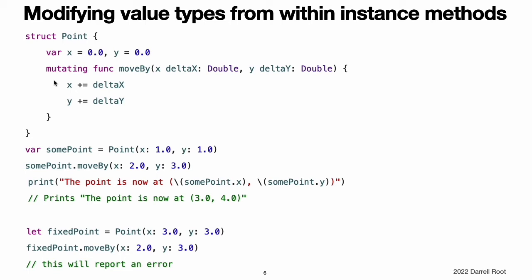The method can also assign a completely new instance to its implicit self property, and this new instance will replace the existing one when the method ends. You can opt into this behavior by placing the mutating keyword before the func keyword for that method. The point structure defines a mutating moveby method, which moves a point instance by a certain amount. Instead of returning a new point, this method actually modifies the point on which it is called. The mutating keyword is added to its definition to enable it to modify its properties. Note that you cannot call a mutating method on a constant of structure type because its properties cannot be changed, even if they are variable properties, as described in stored properties of constant structure instances.